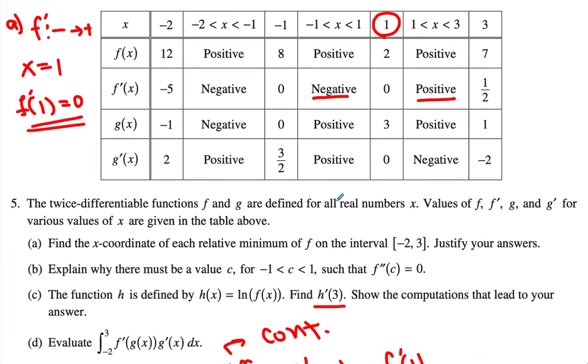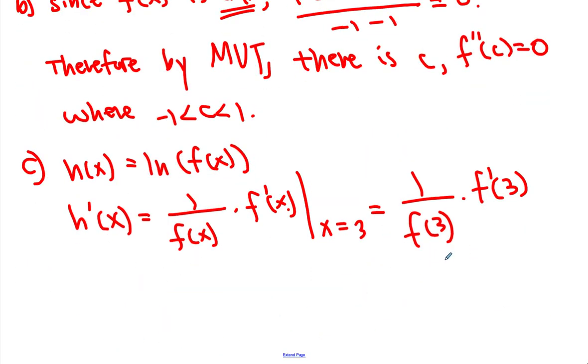So let's look at those values. f of 3 is 7 and f' of 3 is 1 half. So we get 1 over 7 times 1 half. We get 1 over 14. That becomes our answer.